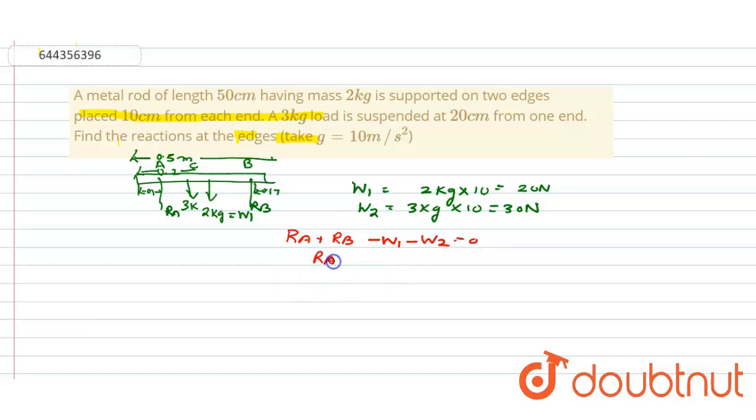So what we are getting: RA plus RB is equal to W1 plus W2. So we have got RA plus RB is equal to 50. So this is our equation 1. Now we have to find RA and RB values.